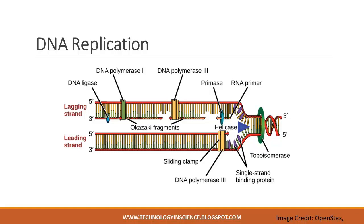In prokaryotes, three main types of DNA polymerase are known: DNA polymerase-1, DNA polymerase-2, and DNA polymerase-3. DNA polymerase-3 is the enzyme required for DNA synthesis. DNA polymerase-1 is used later in the process, and DNA polymerase-2 is used primarily for repair.